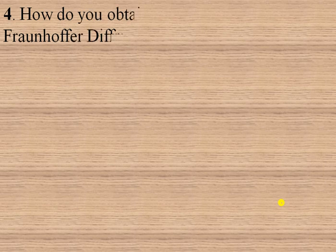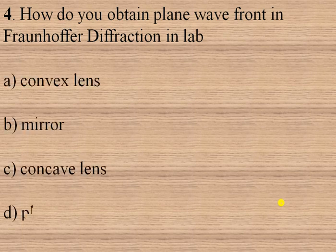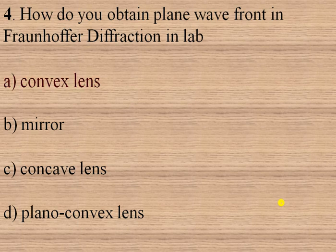The next question is: how do you obtain a plane wave front in Fraunhofer diffraction in the lab — using a convex lens, mirror, concave lens, or plane lens? In Fraunhofer diffraction the wave front is plane and the distance between source and screen is infinite. A plane wave front means the wave is coming from infinite distance, and if we use a convex lens then the wave front of the incident wave becomes plane. So we use the convex lens.